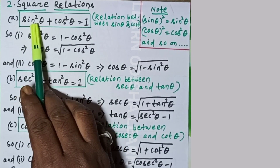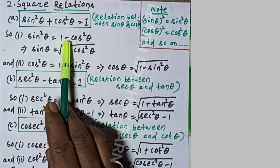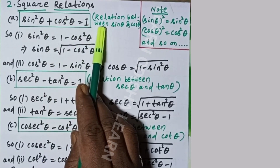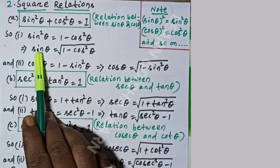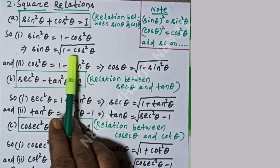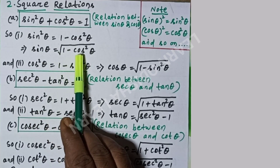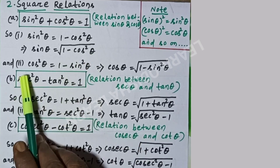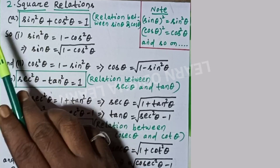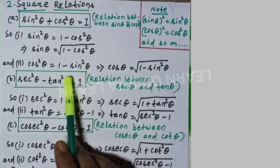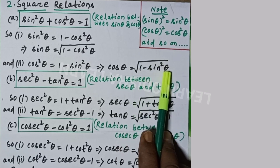From the first square relation sin²θ + cos²θ = 1, we get sin²θ = 1 − cos²θ, and so sin θ = √(1 − cos²θ). Also, cos²θ = 1 − sin²θ, and cos θ = √(1 − sin²θ). From the second relation sec²θ − tan²θ = 1, we get sec²θ = 1 + tan²θ, so sec θ = √(1 + tan²θ), and tan²θ = sec²θ − 1, so tan θ = √(sec²θ − 1).